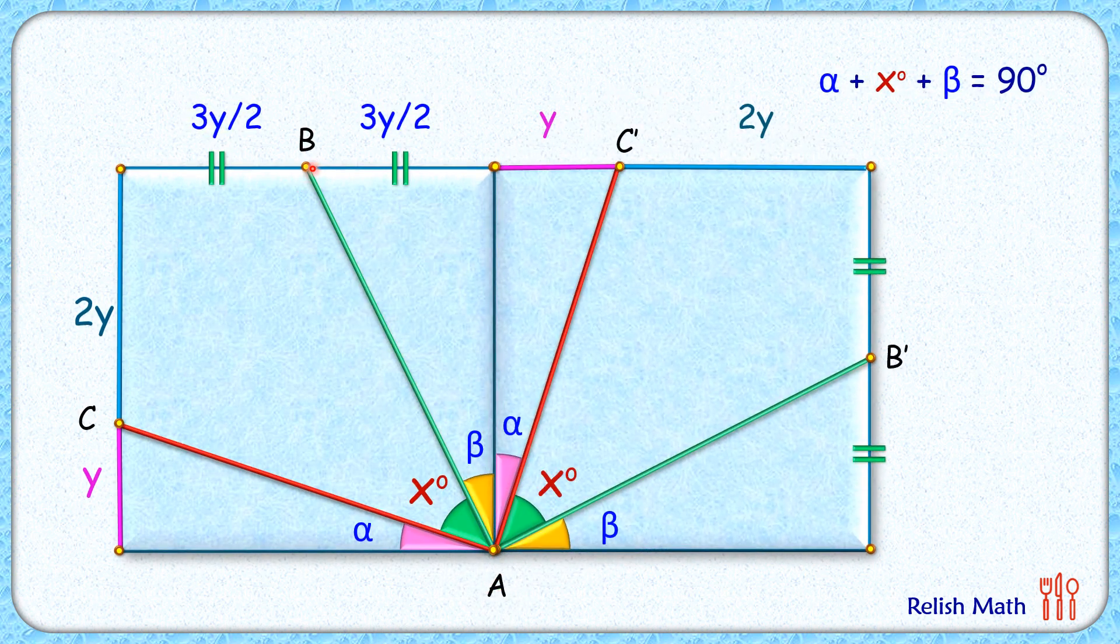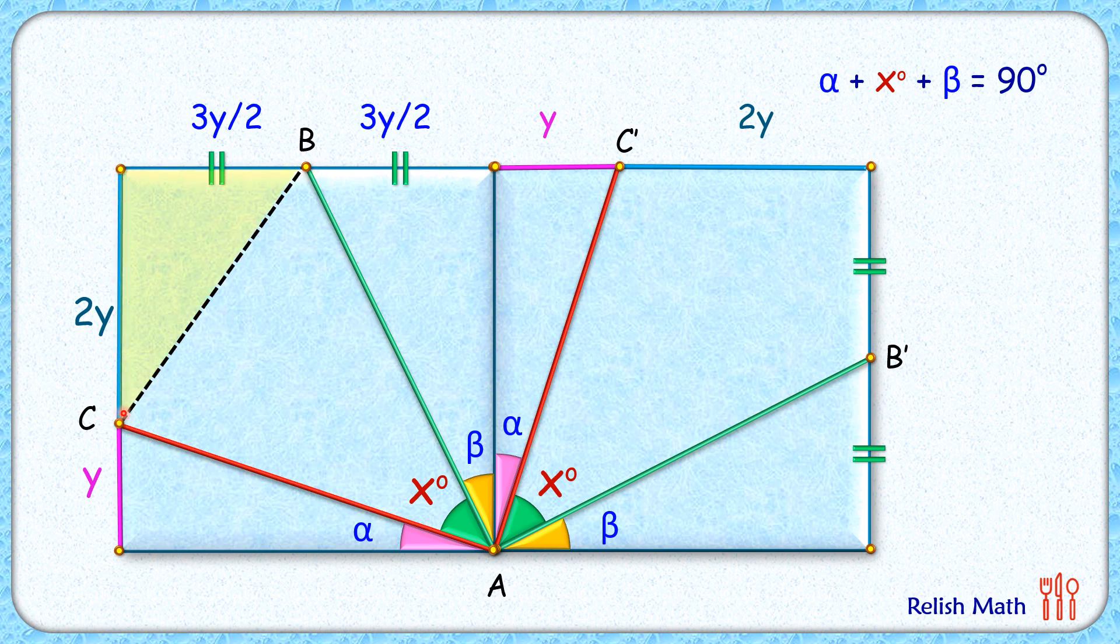Here, let's join this point B and C. Now this triangle is a right angle triangle, so BC we can find by using Pythagorean theorem. On solving, we'll get BC as 5y by 2.